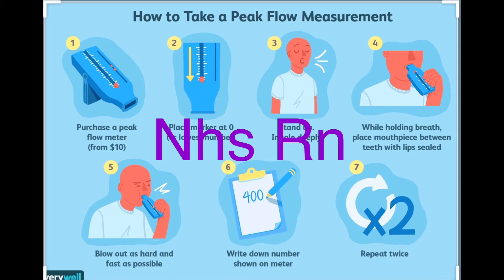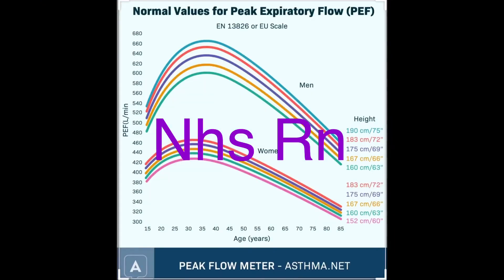Explain that to use the meter, the patient must either be seated or standing upright — they should not flex their neck. Make sure they use the same position every time they perform the peak flow. Ask them to sit or stand in an upright position and keep the same position for all three attempts.